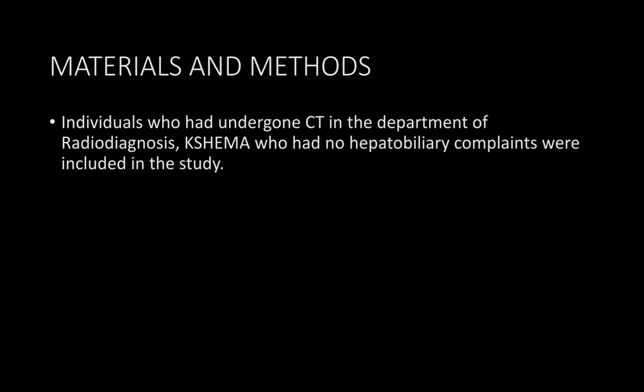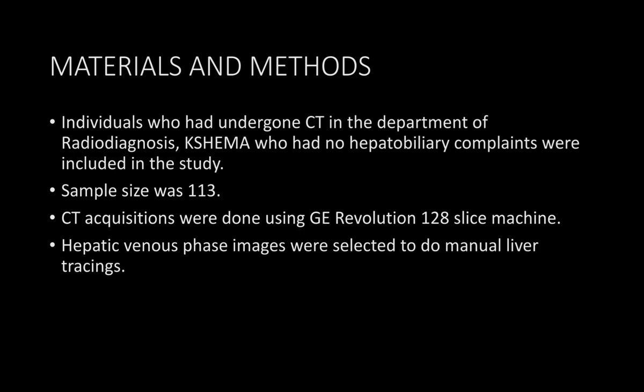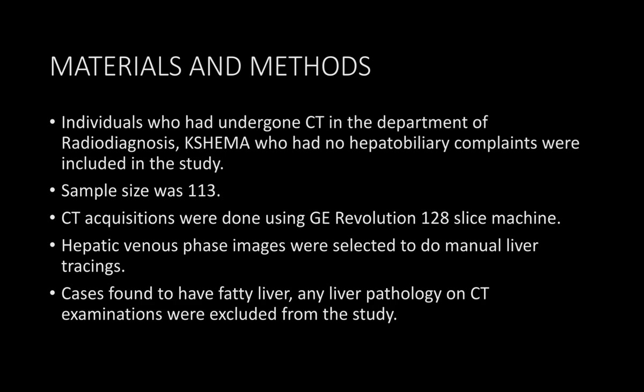Regarding materials and methods: individuals who had undergone CT in the department of radiodiagnosis who had no hepatobiliary complaints were included. The sample size calculated was 113. CT acquisitions were done using a GE Revolution 128-slice machine, and post-contrast hepatic venous phase images were used to calculate liver volumetry, so that liver margins could be clearly delineated. Cases found to have fatty liver or any other liver pathology or anything that could alter liver morphology were excluded.